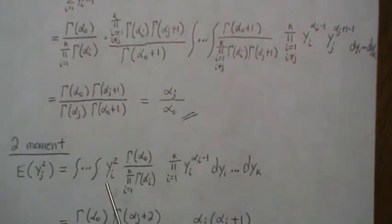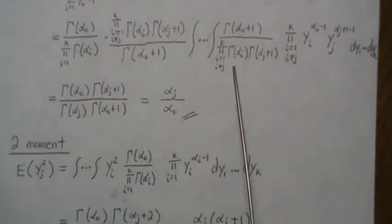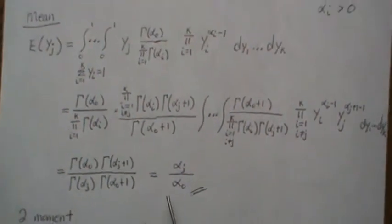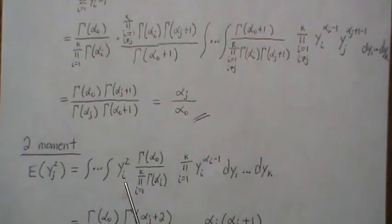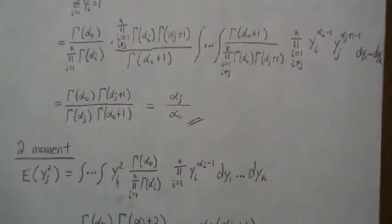We have to take yj squared, and then this is the density, and then we do this trick up here where we incorporate that into the jth term. This gets incorporated into the jth term here.